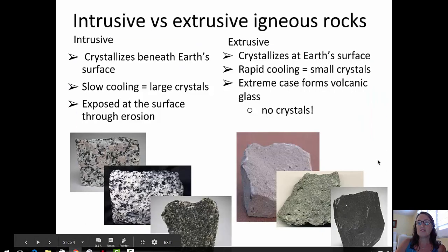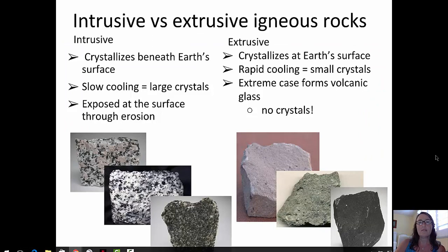We're going to focus to begin with on the two main categories of igneous rocks: intrusive and extrusive igneous rocks. Intrusive igneous rocks, shown on the left hand side here, are rocks that crystallize beneath earth's surface. They cool slowly compared to extrusive rocks and thus their crystals have time to grow larger, and they are exposed at the surface through erosional processes.